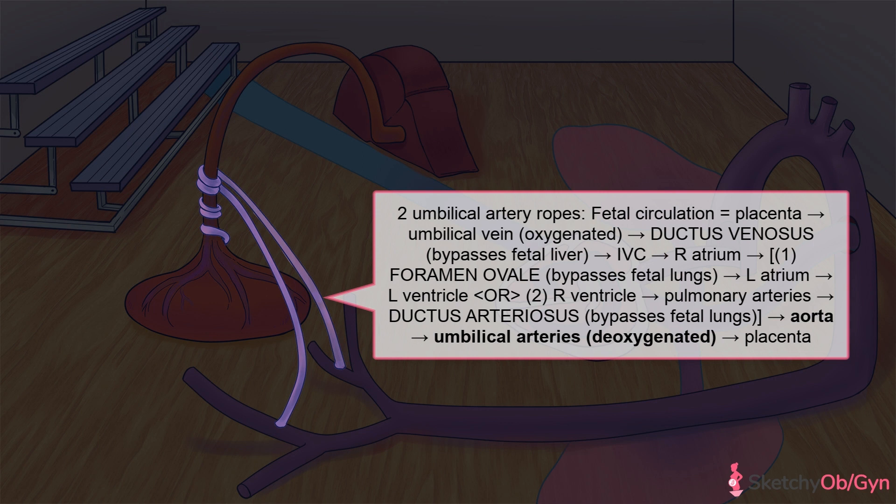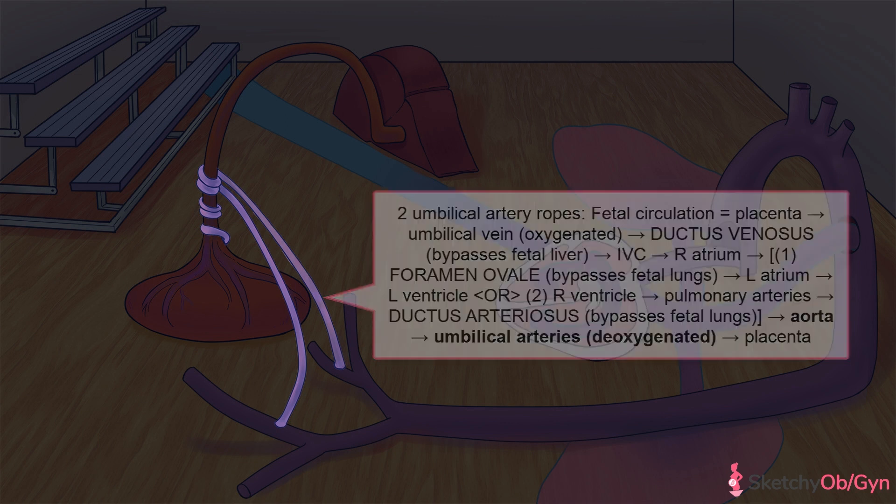Another unique feature of fetal circulation is that it has multiple shunts that do not exist in adult circulation — three, to be exact. These are the ductus venosus, foramen ovale, and the ductus arteriosus, which we'll go over later in this sketch.